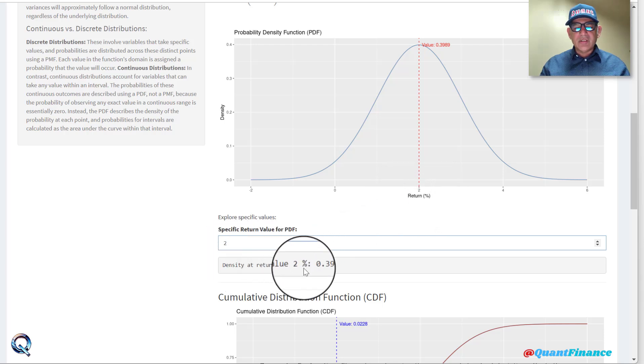When the average return is two, the density of return at two percent stock return is 0.3989. If the probability of getting two percent returns is exactly 0.3989, which is 39.89%.